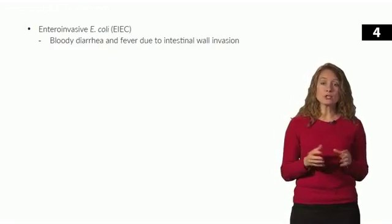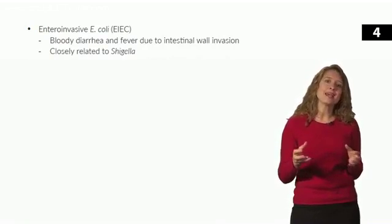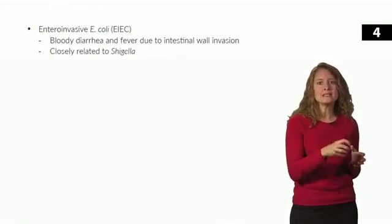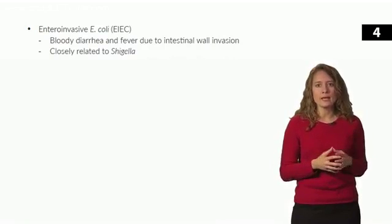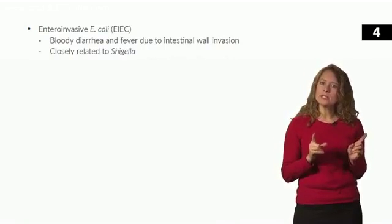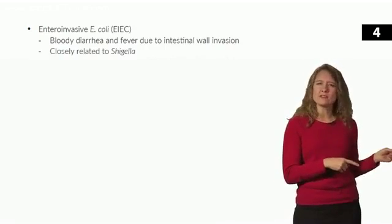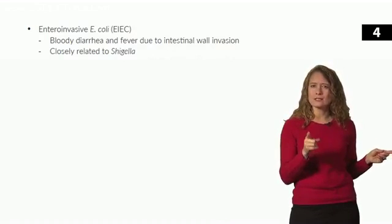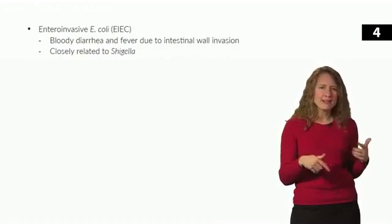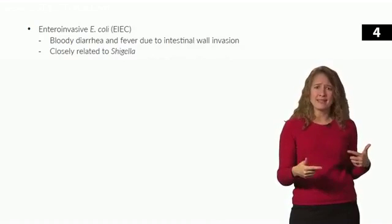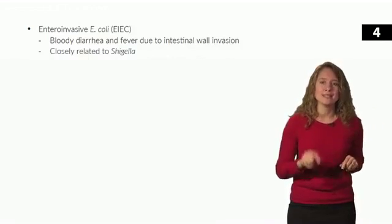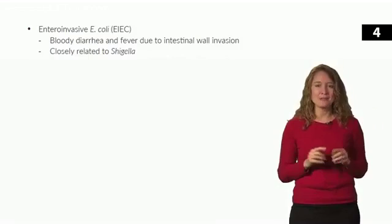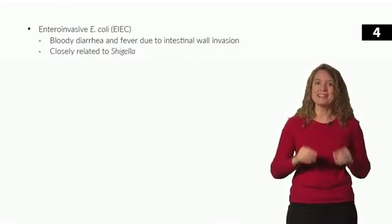Enteroinvasive E. coli is closely related to Shigella in that it invades the intestinal mucosa and can cause bloody diarrhea. You might be thinking — didn't we just talk about a different E. coli that's similar to Shigella and causes bloody diarrhea? Let me clarify the difference between these two Shigella-like E. coli types.